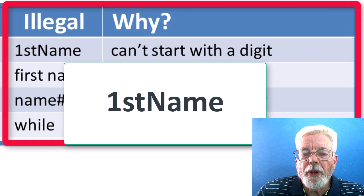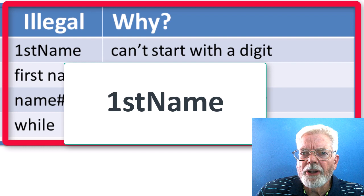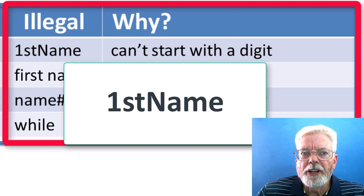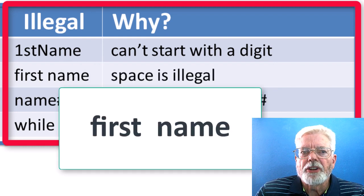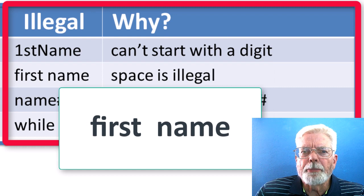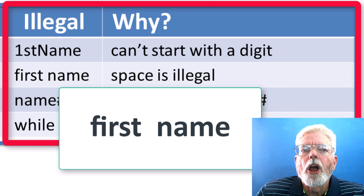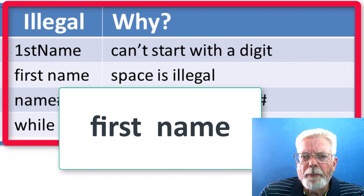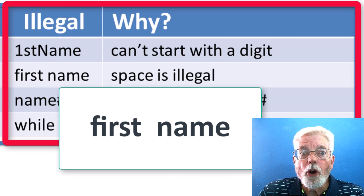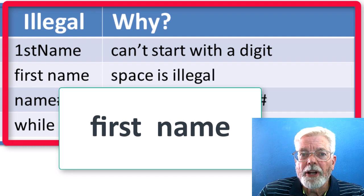First name starting with a numeric one is illegal because the first character is a numeric digit. First space name is illegal because a space character is used to separate the two English words. A programming language would look for a variable name first and then would not know what to do when it found the word name.